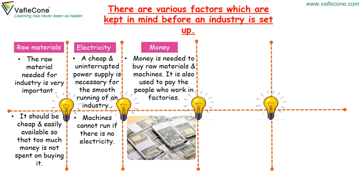Money: Money is needed to buy raw materials and machines. It is also used to pay the people who work in factories.